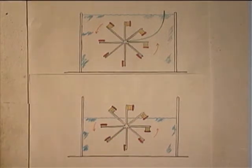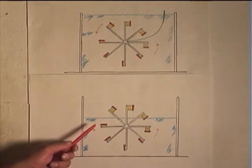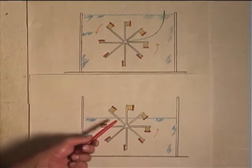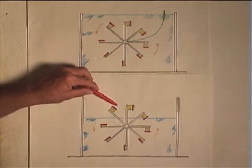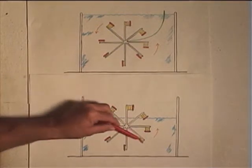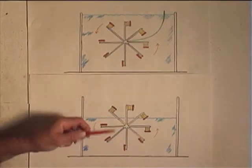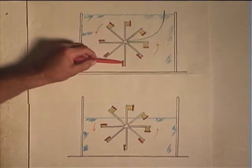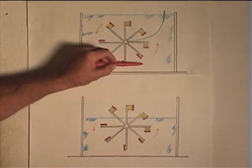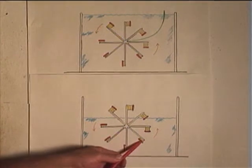The advantage of that is that you can cut the weight of the weights in half, because half the weight drops down here and the other half drops out here. In the original design, the weights had to be 80 pounds each. Now, in this, they only have to be 40 pounds.